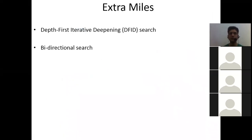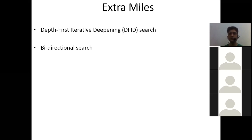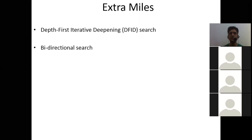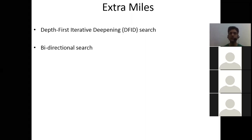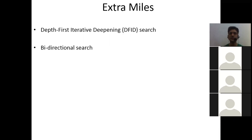As some extra work, depth first iterative deepening search and bidirectional search will not be covered in your syllabus, but it is good to find out how these work. A little hint: in depth first iterative deepening, we will use the characteristics of both depth first search and breadth first search, and in this manner overcome the disadvantages of both. If you have any difficulty understanding depth first iterative deepening and bidirectional search, let me know and I will have an extra class on that.